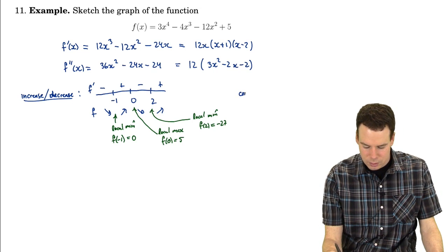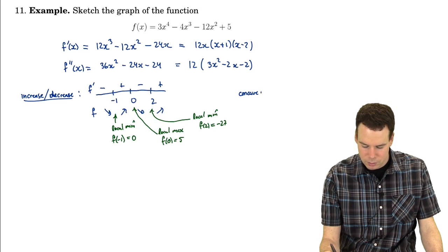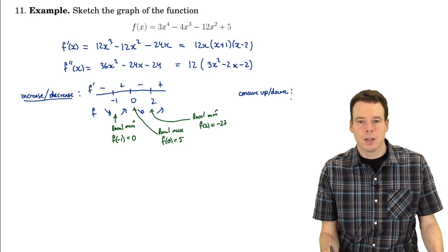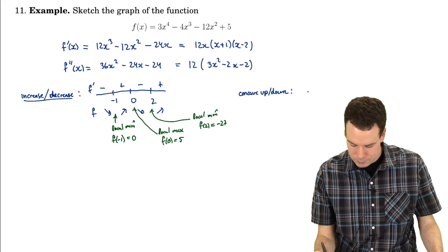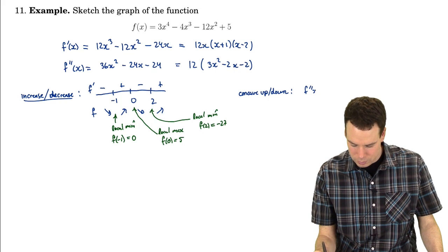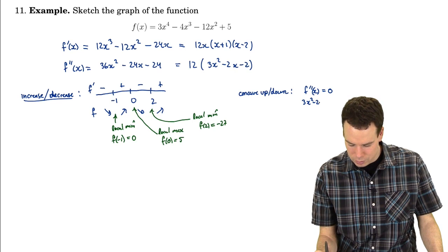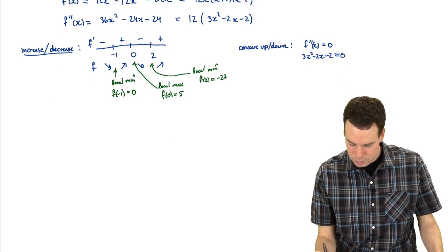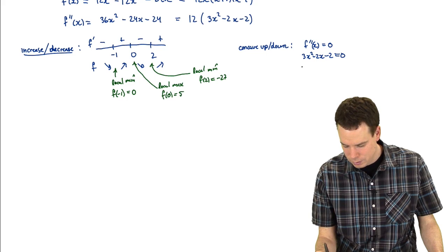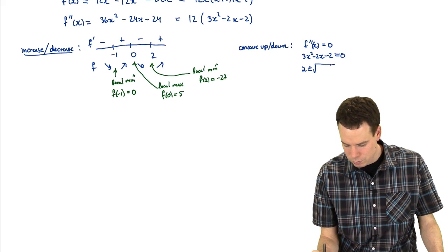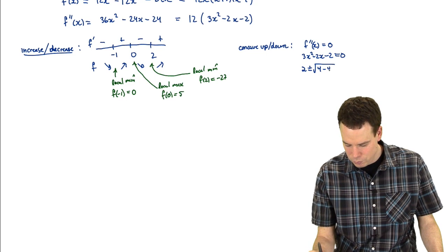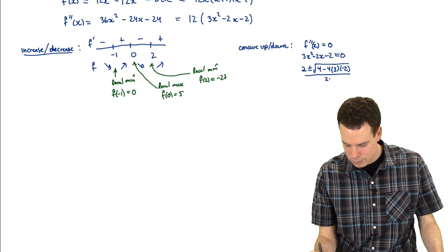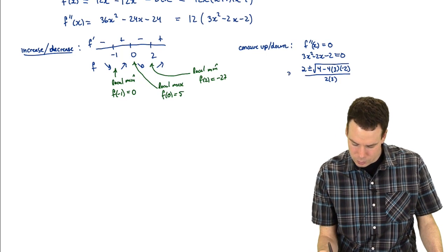What about the concavity? To figure out concavity, we need to know where the roots of the second derivative are. Where is f''(x)=0? That's when 3x² - 2x - 2 = 0. We can use the quadratic formula: x = (-b ± √(b² - 4ac))/(2a).